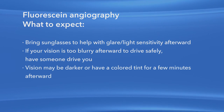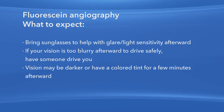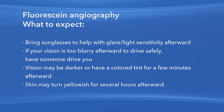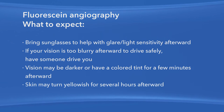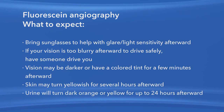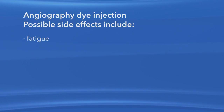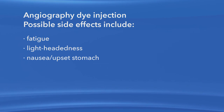Your vision may appear darker or have a colored tint after the procedure, but this will last only a few minutes. After the fluorescein dye is injected, your skin may turn yellowish for several hours. Also, because your kidneys remove the dye from your body, your urine will turn dark orange or yellow for up to 24 hours following the test. Some people may feel tired, lightheaded, or nauseous after having the dye injected.